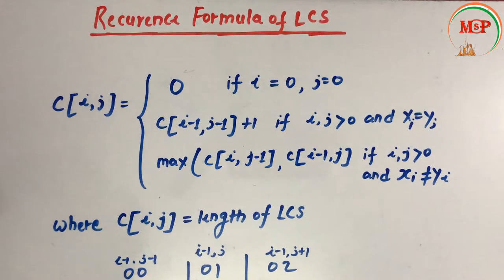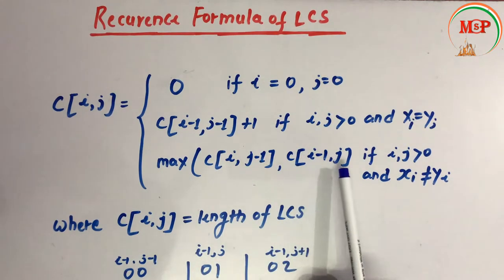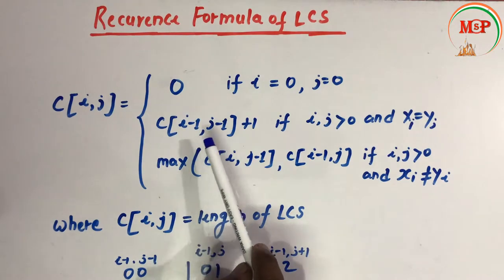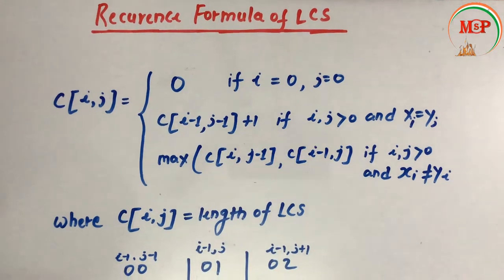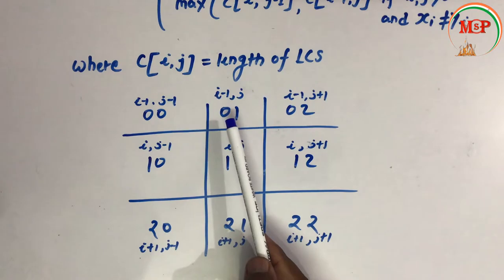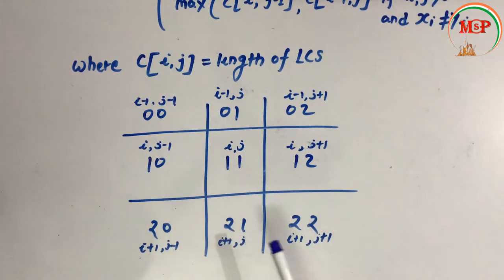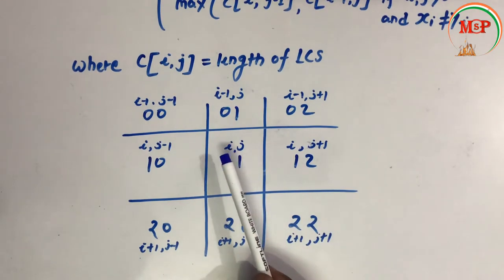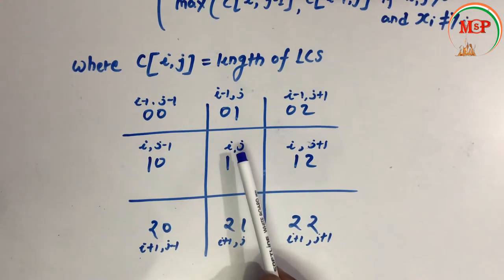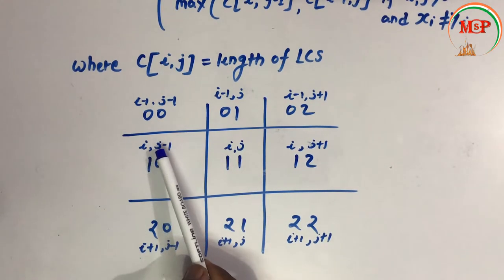Now let's see the pictorial representation of what i[j-1], i-1[j], and i-1[j-1] mean. We have coordinates: the first element is (0,0), then (0,1), (0,2), (1,0), (1,1), (1,2), (2,0), (2,1), (2,2). If the current element is i[j], then the left-side element is i[j-1].